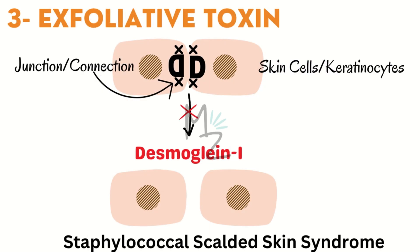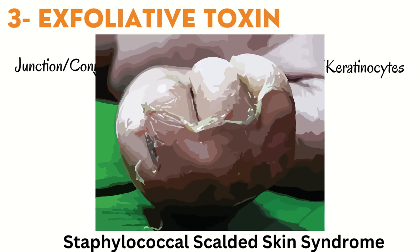The third exotoxin is exfoliative toxin. Keratinocytes (skin cells) are joined by junctions maintained by a protein called desmoglein 1. Exfoliative toxin destroys desmoglein 1, causing the connections between keratinocytes to be lost. They are no longer able to stay together — blisters form and the skin sloughs off. This is called Staphylococcal Scalded Skin Syndrome, seen in children under six years of age.